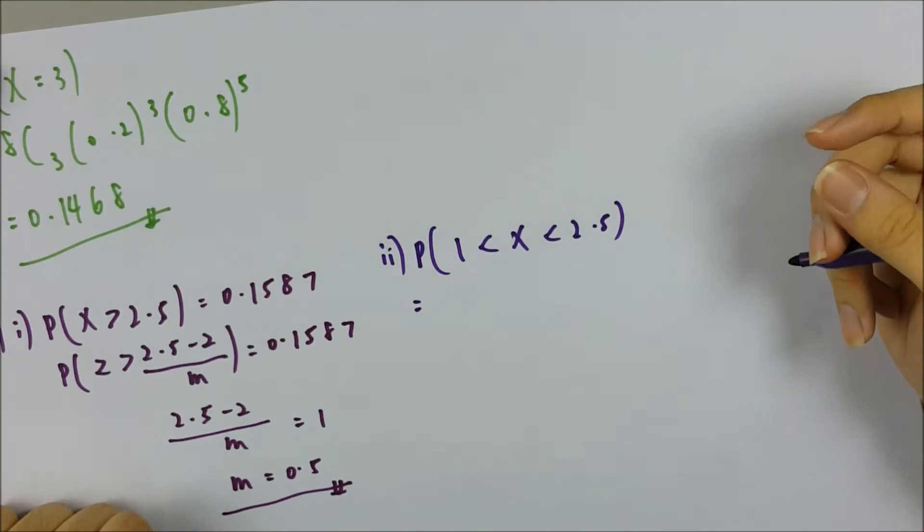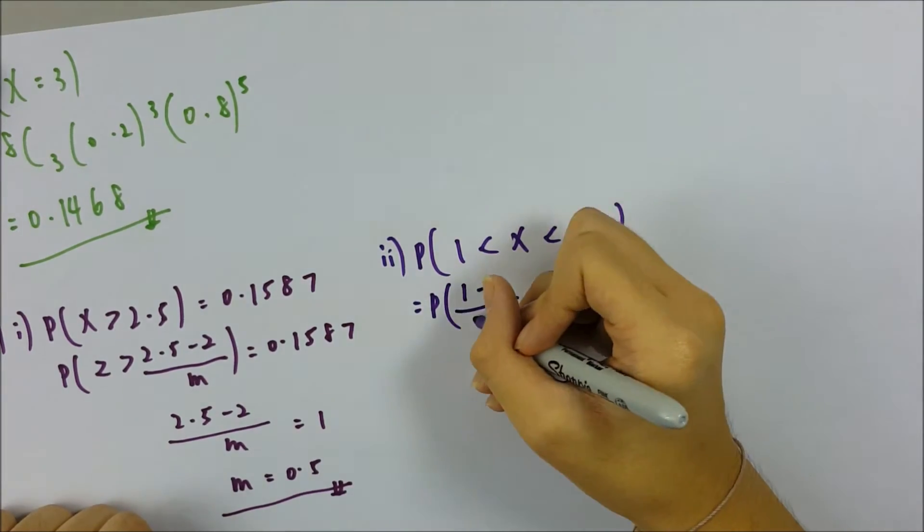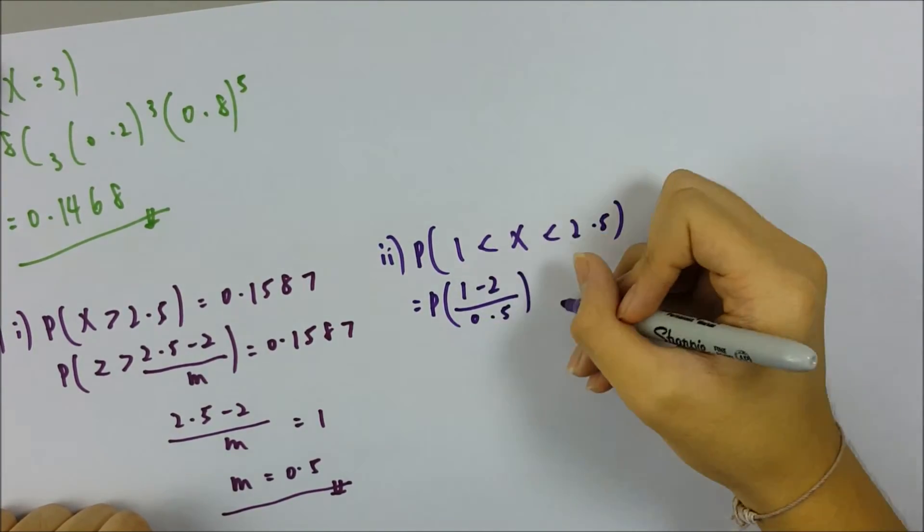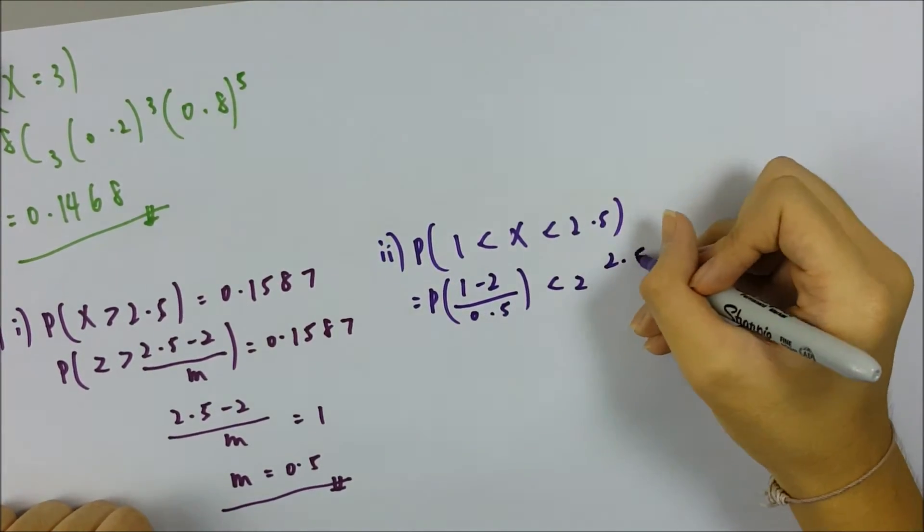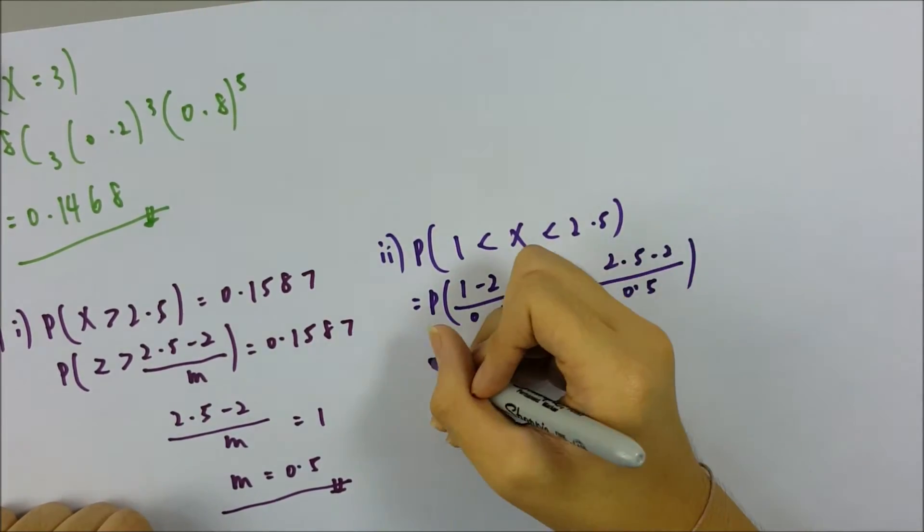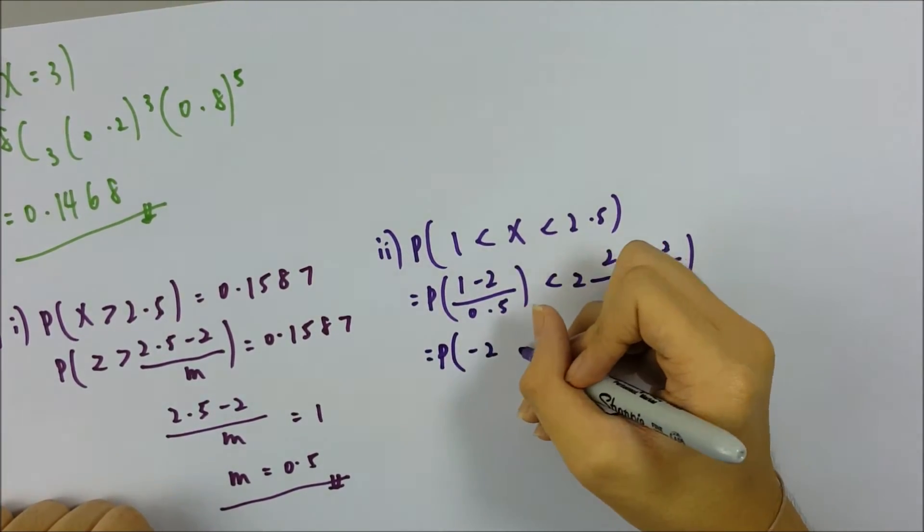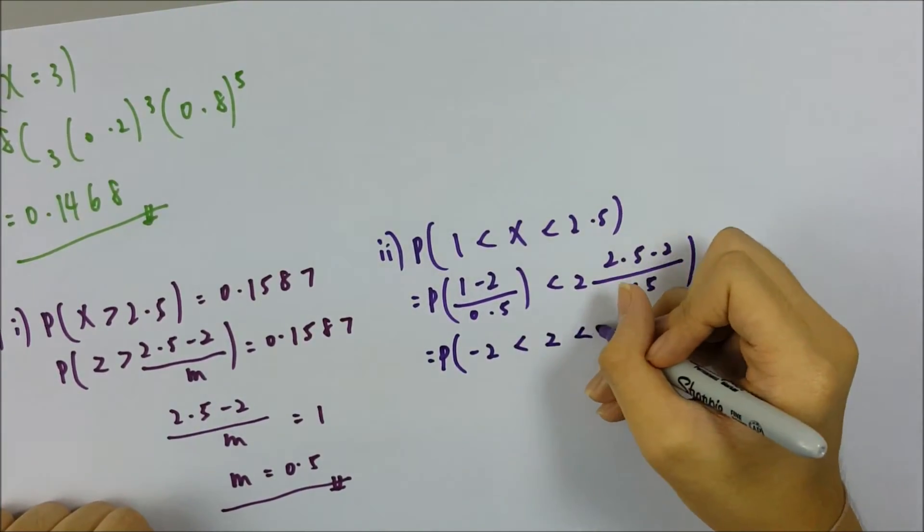You have to change the X to the Z score. P((1 - 2) / 0.5 < Z < (2.5 - 2) / 0.5). So 1 minus the mean is 2, and the standard deviation is 0.5. 2.5 minus 2, standard deviation. Then you press your calculator: P(-2 < Z < 1).